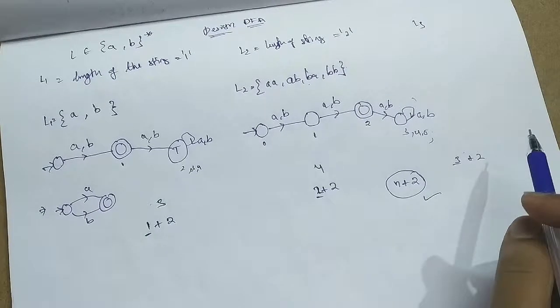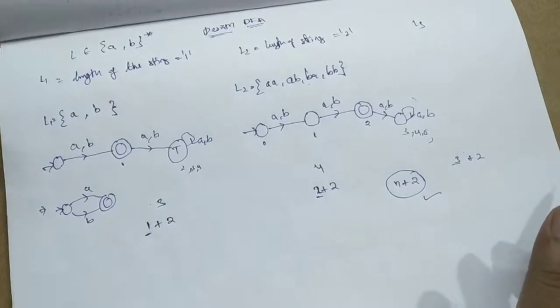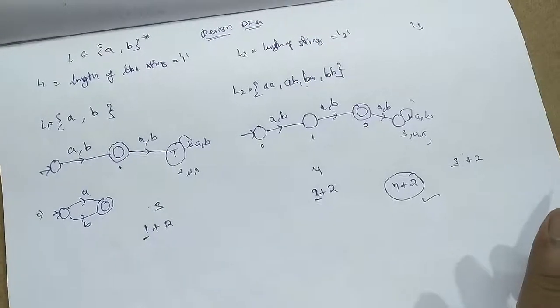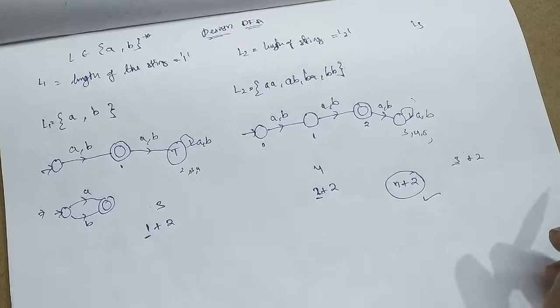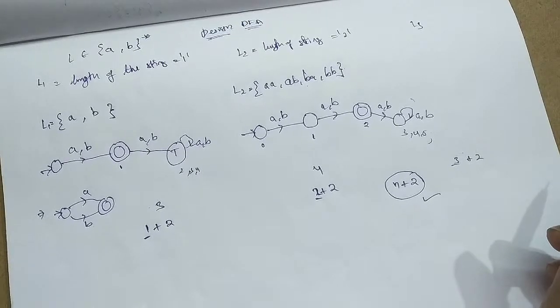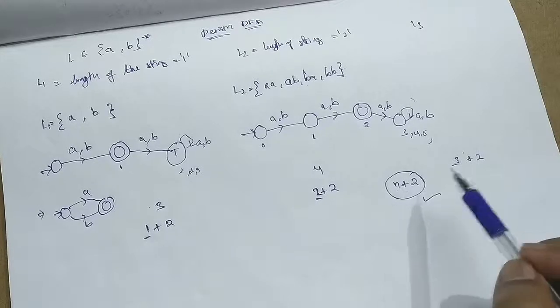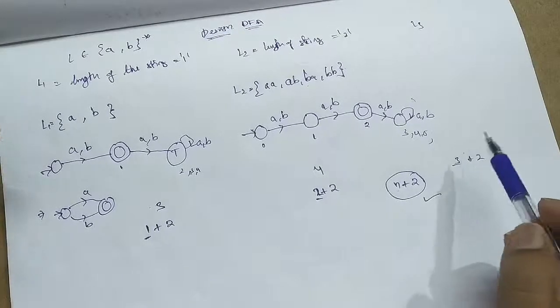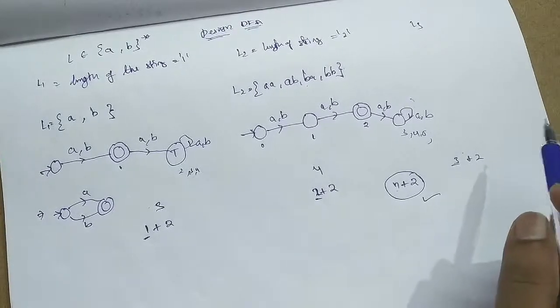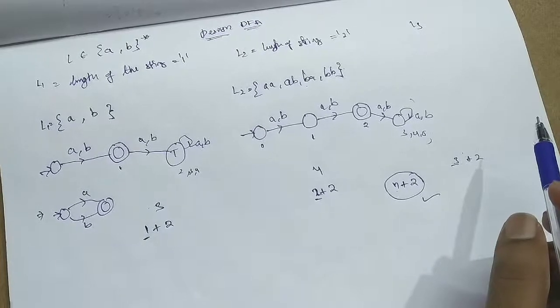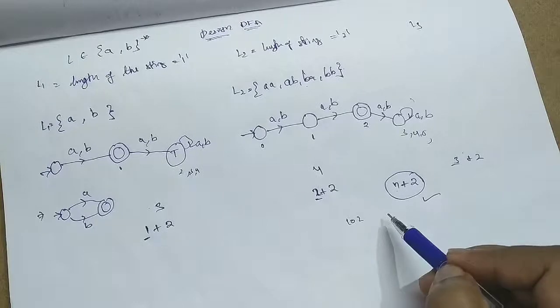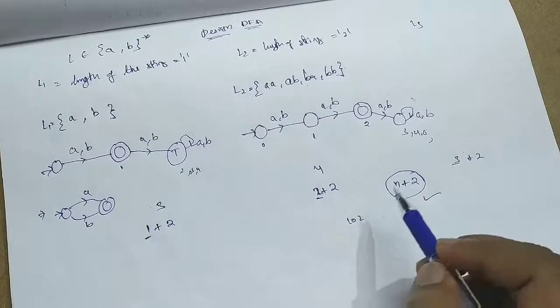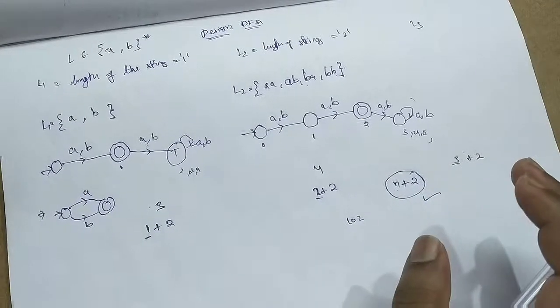If you got the question like this: what is the minimum number of states that are there in the DFA which is accepting the languages of all the length of the strings equal to n? If it is 100, in the question, length of the string is 100, DFA will have 100 plus 2 states. 1000 is 1000 plus 2, 1002 states. Similarly, this kind of questions may occur.